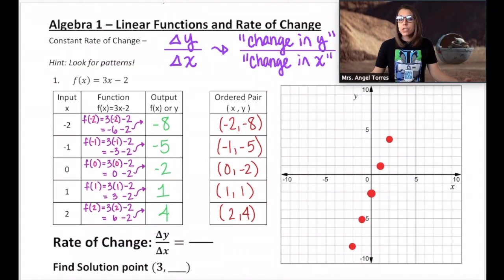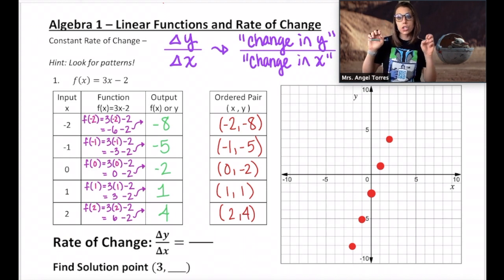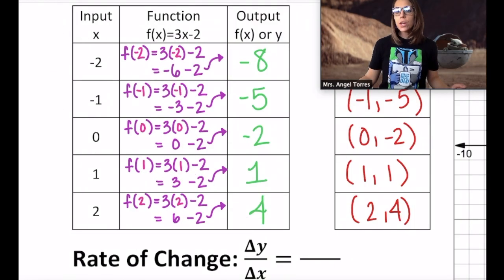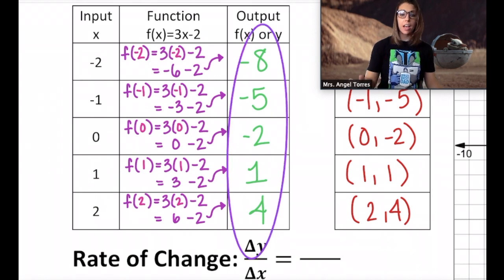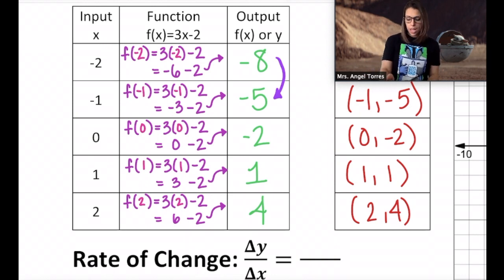But what about this rate of change concept? Rate of change is a ratio. A ratio is a comparison of two quantities, essentially a fraction where the numerator and denominator each represent something specific. The numerator represents your change in y. How is y changing compared to your change in x? How is x changing? To figure this out, we're going to take a closer look at our table. We're first going to look at how is y changing. So y, if you remember, was my set of outputs. What is the pattern here? What is the change from -8 to -5? How do I get from -8 to -5? I would have to add 3 here. So that's a change of +3.